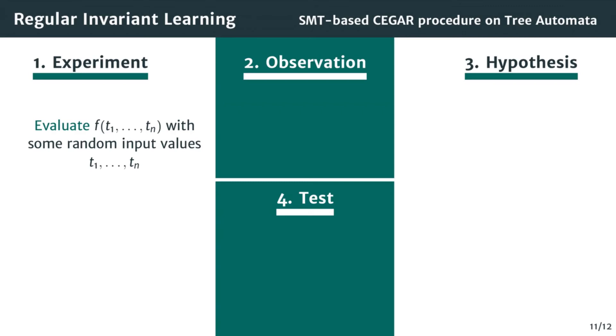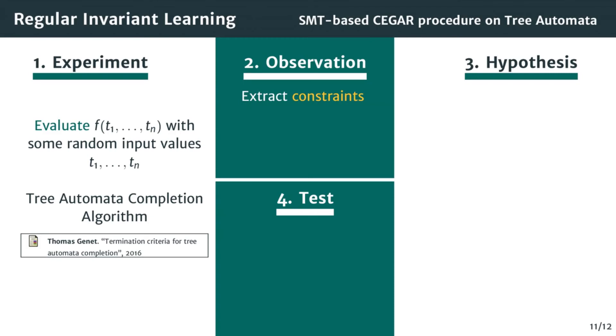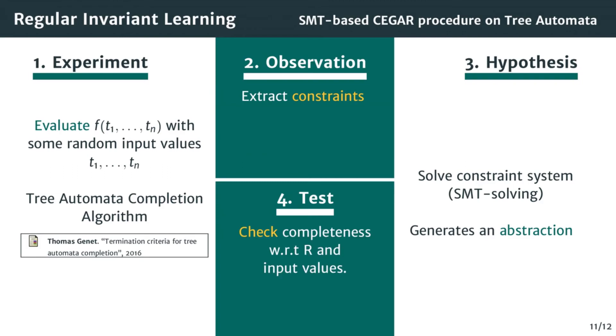We do that efficiently using the tree automata completion algorithm. We then observe the result of our experiment and deduce some constraints on the language we are learning. We then make a hypothesis. By using an SMT solver, we solve the constraints which generate an abstraction of the program execution. This gives us a possible regular language solution. We check the correctness of the abstraction by checking its completeness with regard to the rewriting system and the input domain. If it is, we are done. And if it isn't, we continue by doing more experiments.